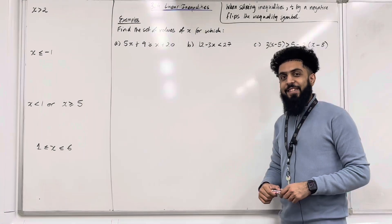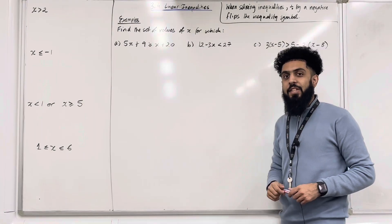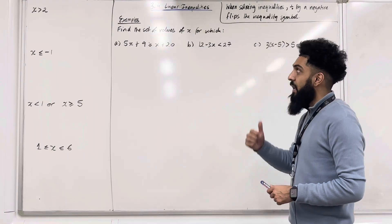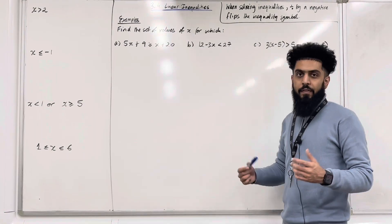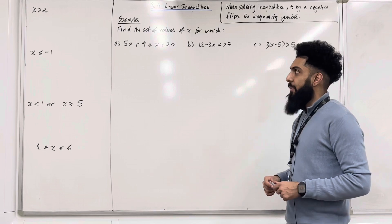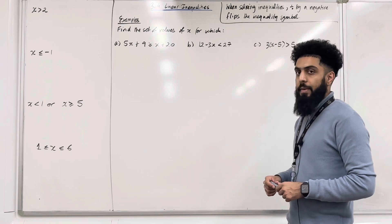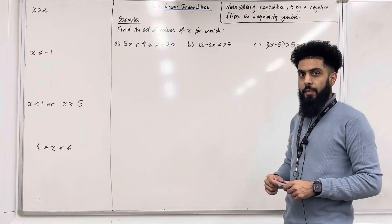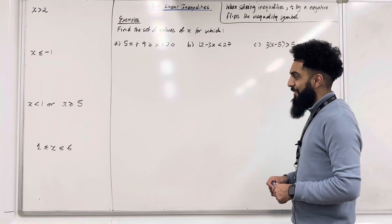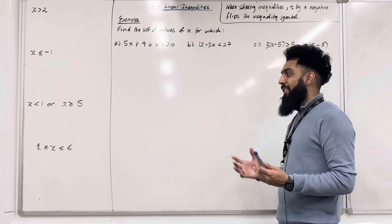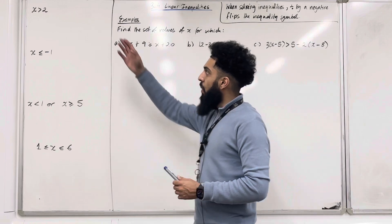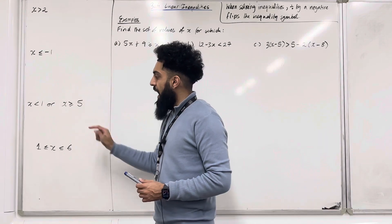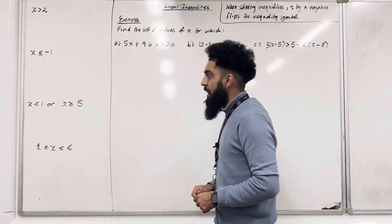Welcome back ladies and gents. In this particular teaching video I'll be looking at 3.4 linear inequalities. 3.4 represents chapter 3, section 4 of the Pearson A-level Maths Pure Maths Year 1 textbook. I'm going to start this teaching video by going through 1, 2, 3 and 4 different inequalities.